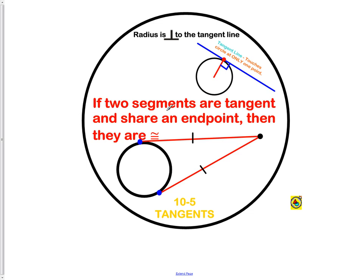If two segments are tangent and share an endpoint, then they are congruent. What that means is both of these tangent lines, the top line and the bottom line, start at the black dot.